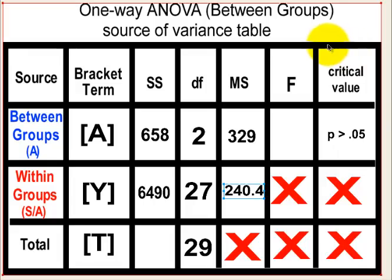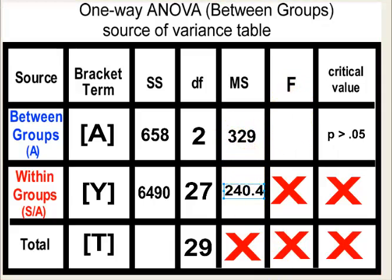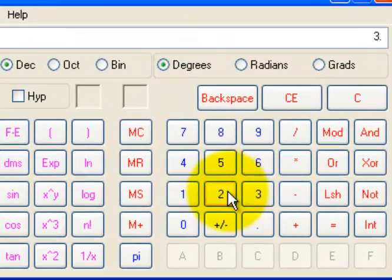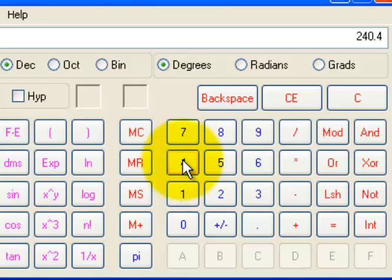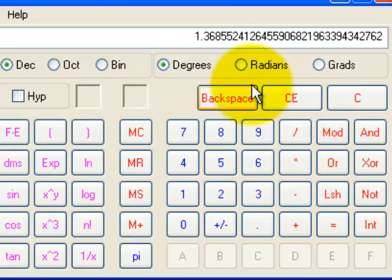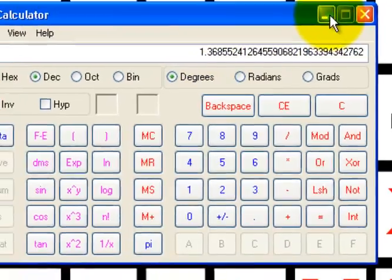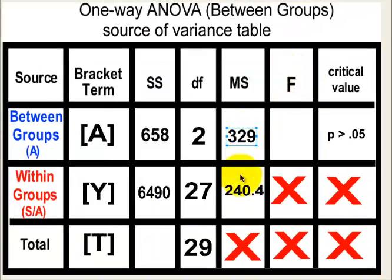That wasn't so bad. Your final F ratio — that's why they call it a ratio — is the ratio of the mean squares of your between-group variance as the numerator, and your denominator is your within-group variance. So our F score is going to be 329 divided by 240.4. You have my permission to round to the nearest whole number. Our F score looks like roughly 1.37.